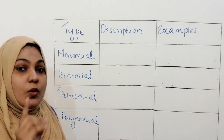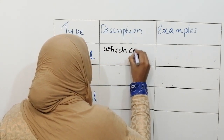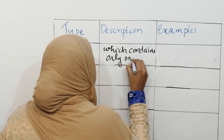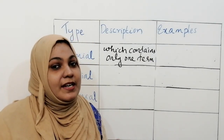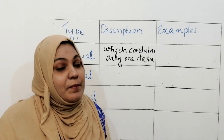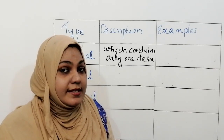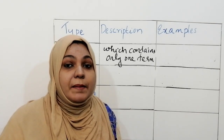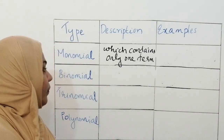Monomial means it contains only one term. We have already discussed all the new terms related with algebraic expression in my previous video. If you are new to my channel, please watch that video first — it will be really easy for you. Do you know what is a term? A term is nothing but a part of an algebraic expression which is separated by a plus or minus sign.